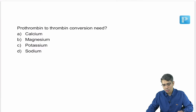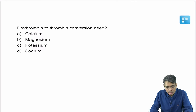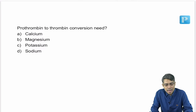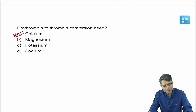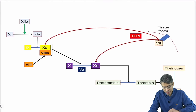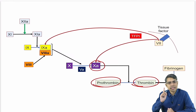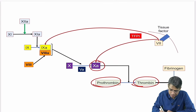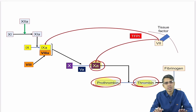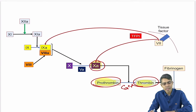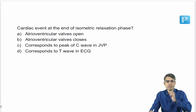Next question: prothrombin to thrombin conversion requires which ion? The answer is calcium. Calcium is required for activation of many coagulation factors. Prothrombin to thrombin conversion is done by active factor 10, and calcium ion is also required for this activation.